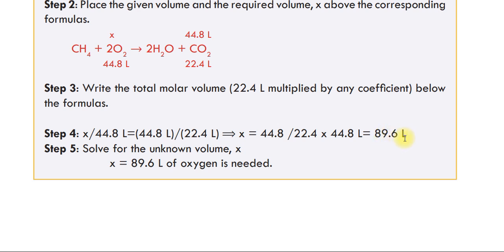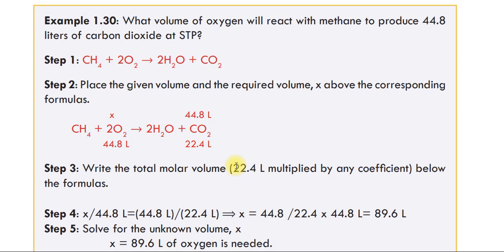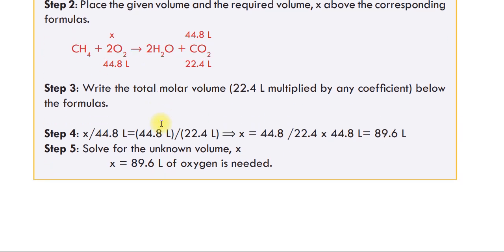Solving gives 89.6 liters as the required volume. Step 5: 89.6 liters of oxygen is needed to react with methane and produce 44.8 liters of carbon dioxide. This completes the volume-volume problem.